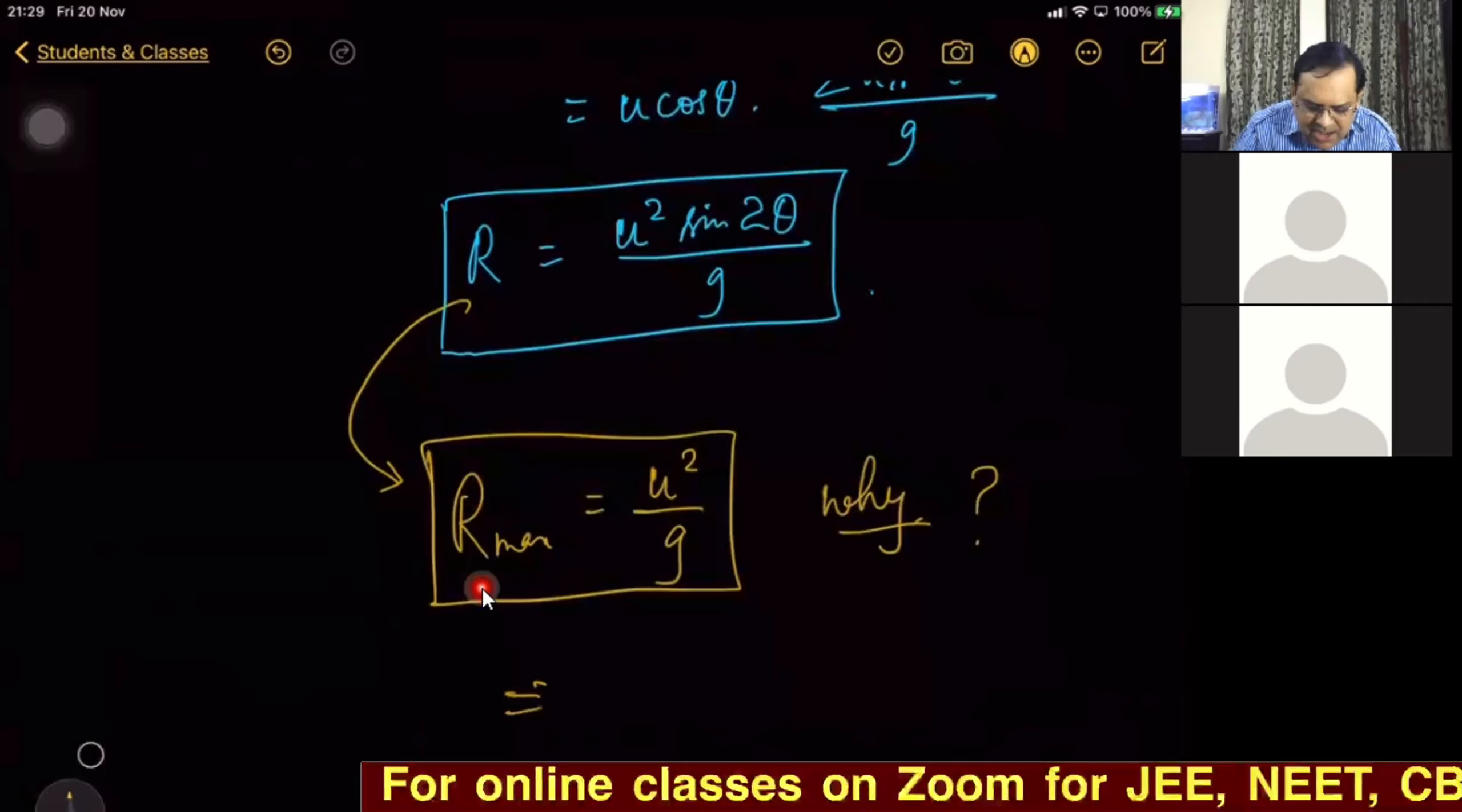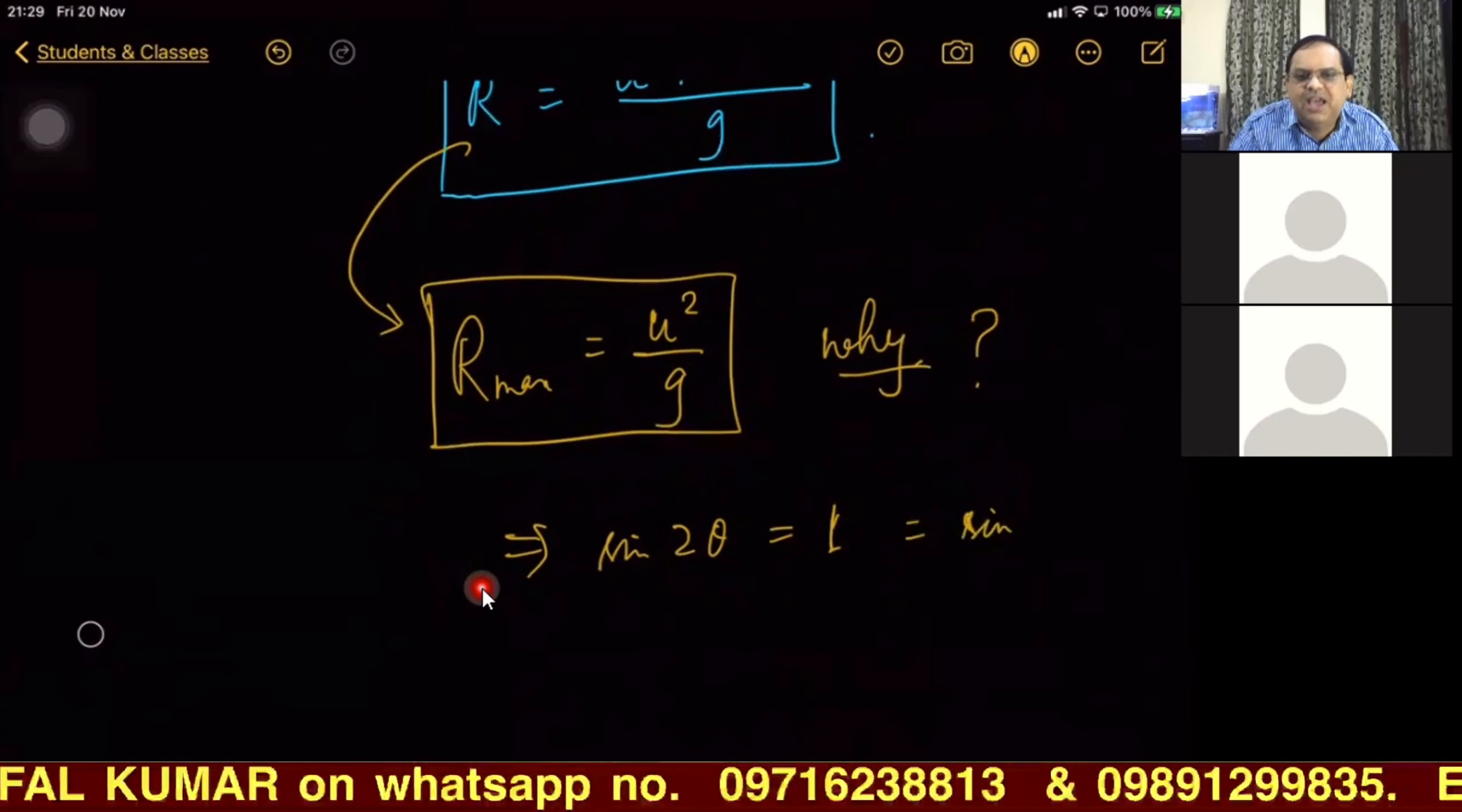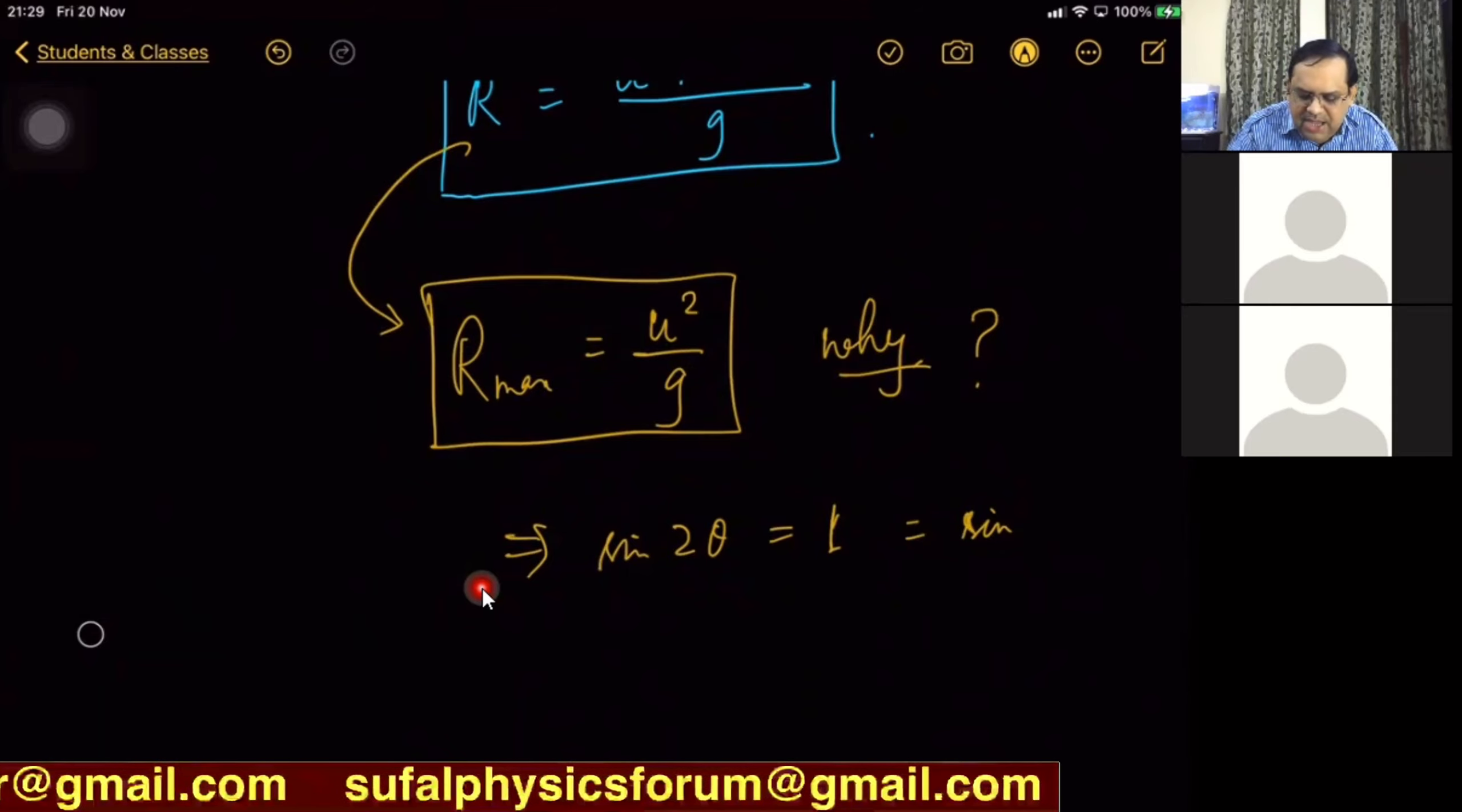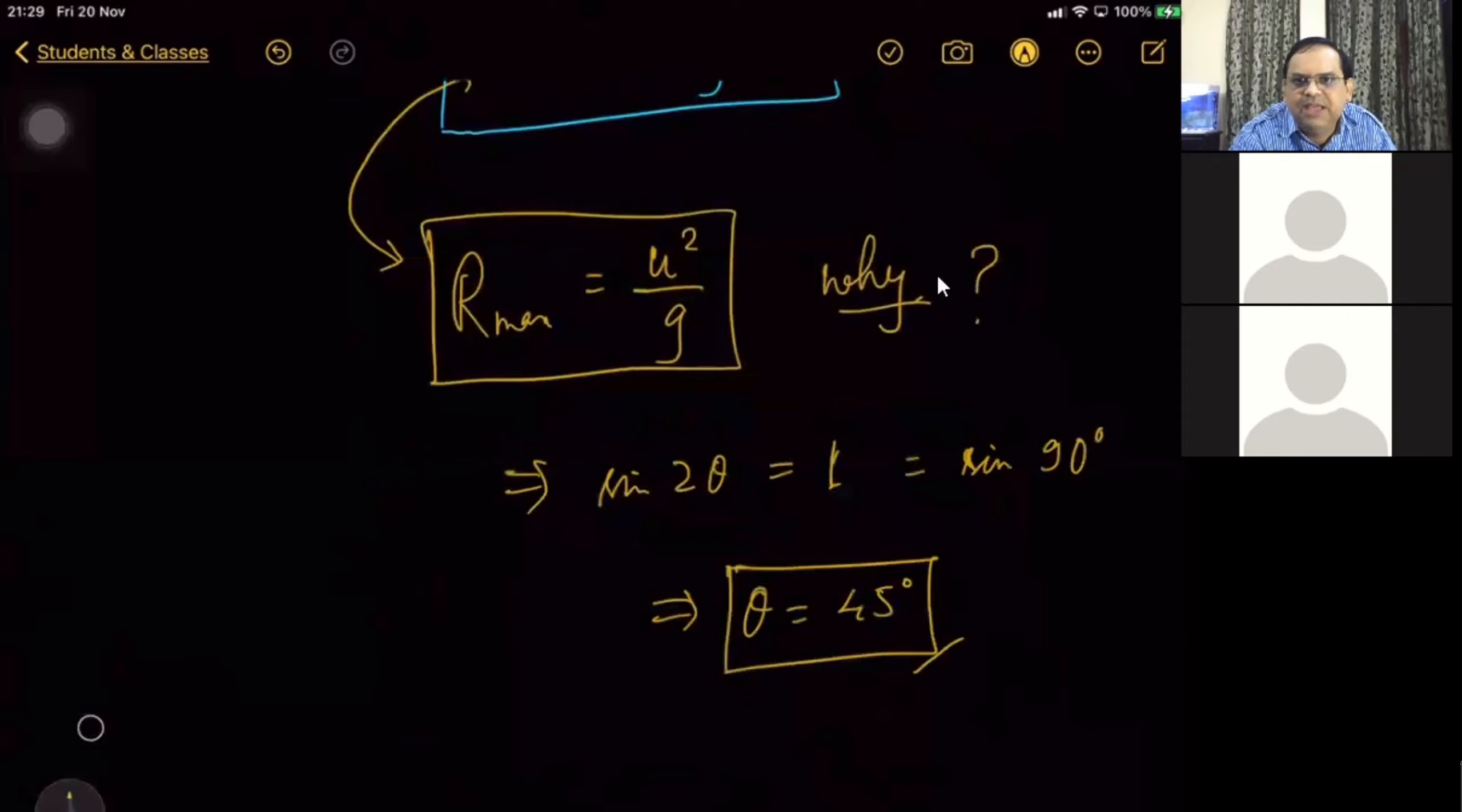So it implies that sin 2θ = 1. That means, trigonometry me you must have read general solution also. Here we don't have to do general solution. Simply sin 90°, it implies that θ = 45°.